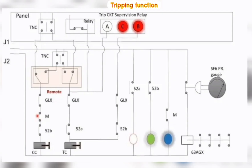Tripping function: the diagram shows trip operation. When any fault occurs, the relay contacts change to NC position, thus energizing the trip coil. Auxiliary contact 52A was in the closed condition prior to tripping.